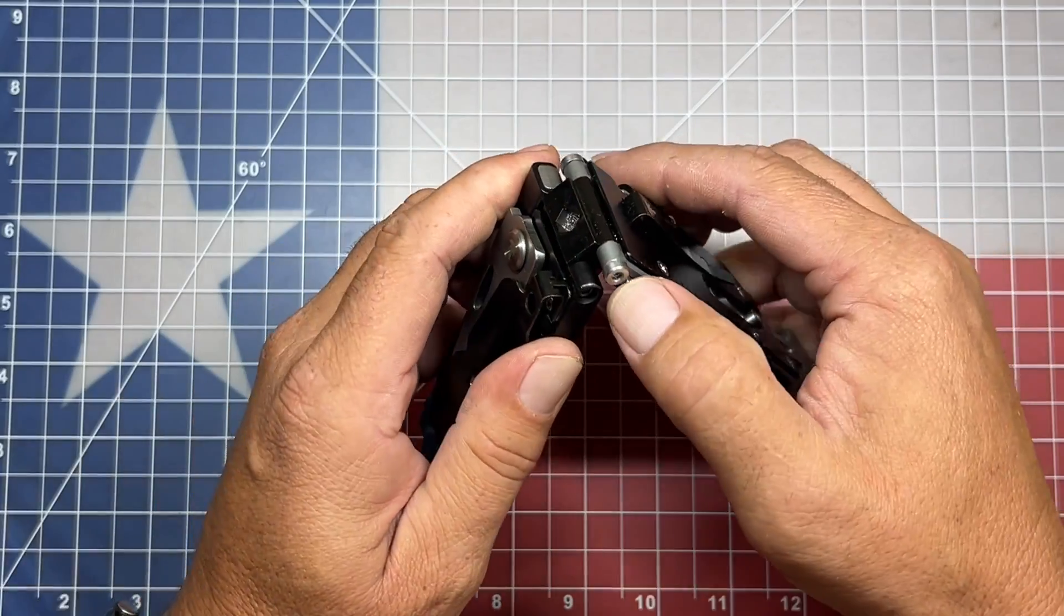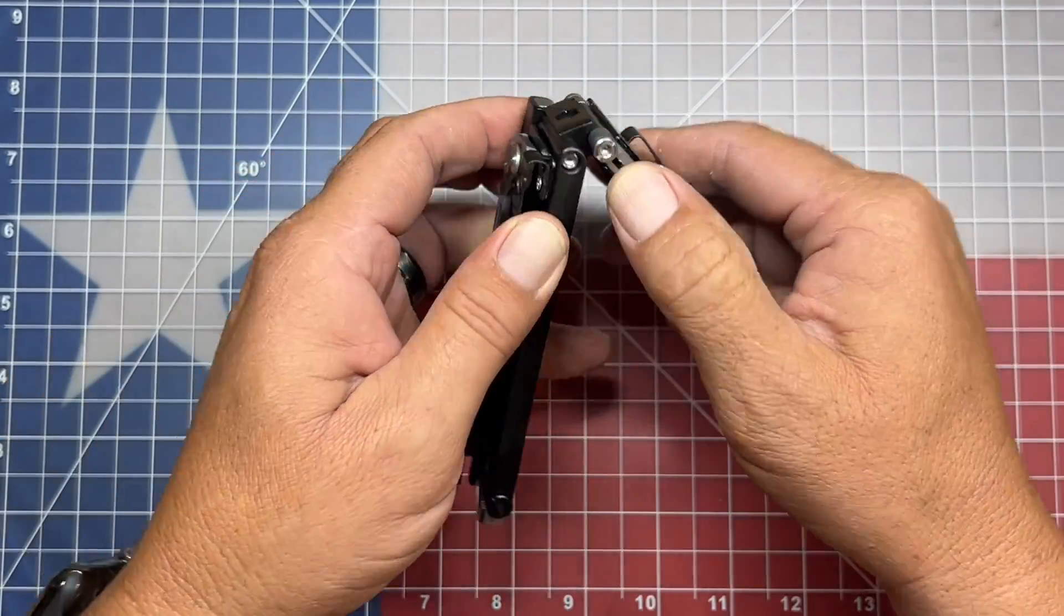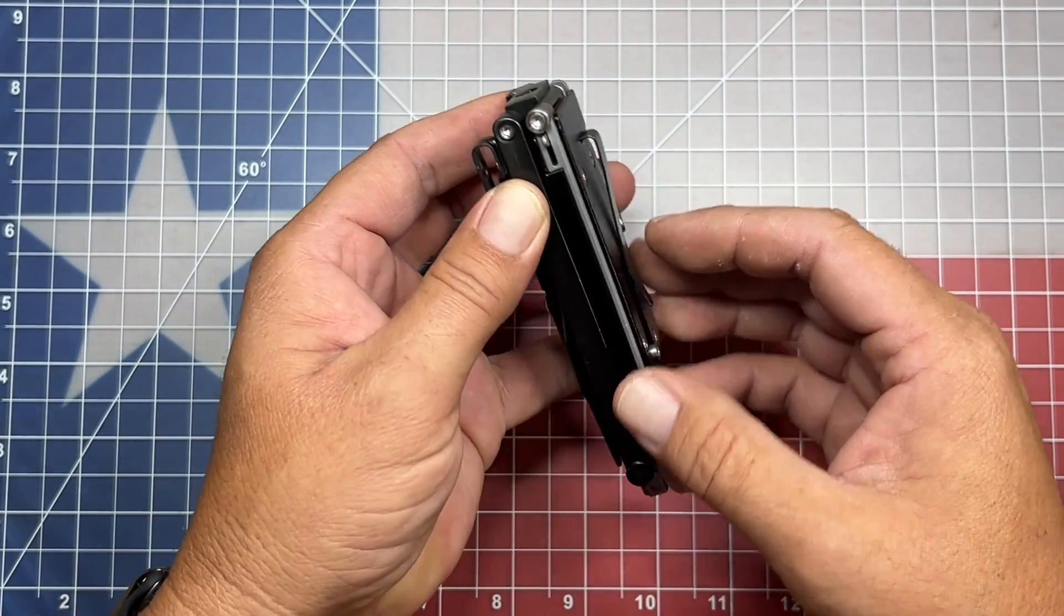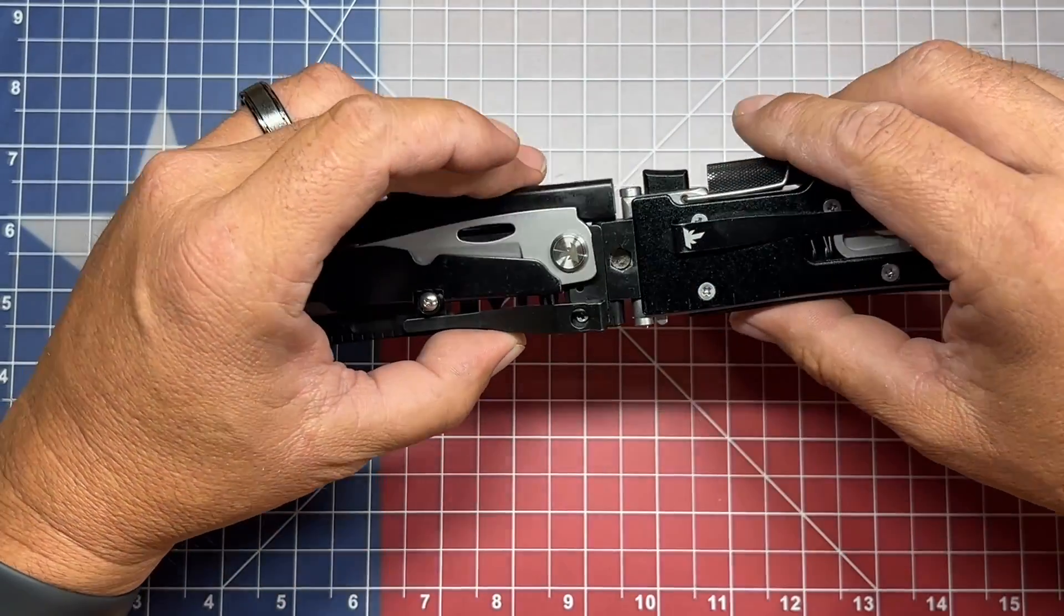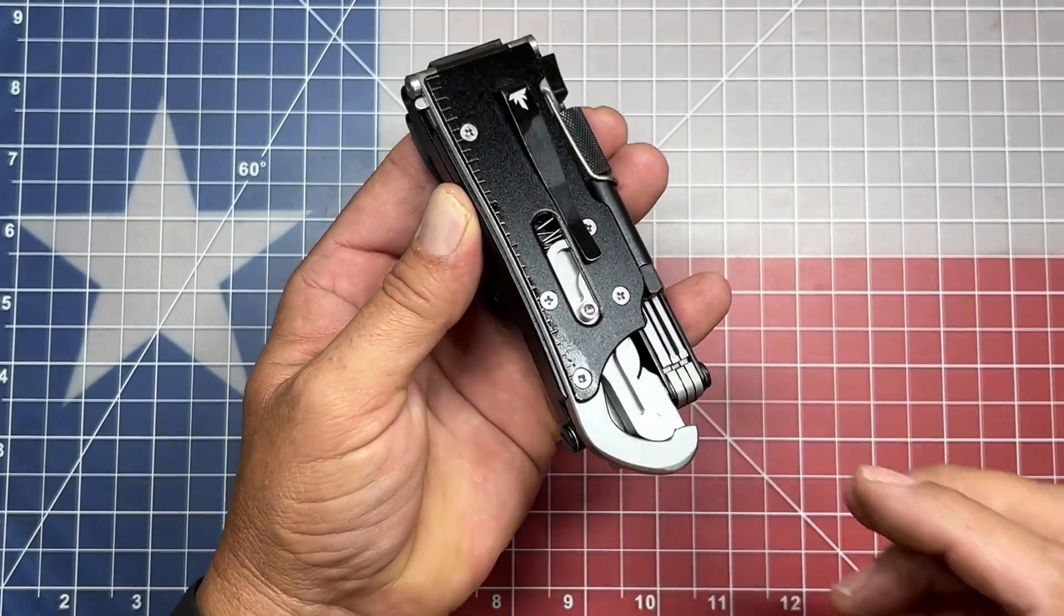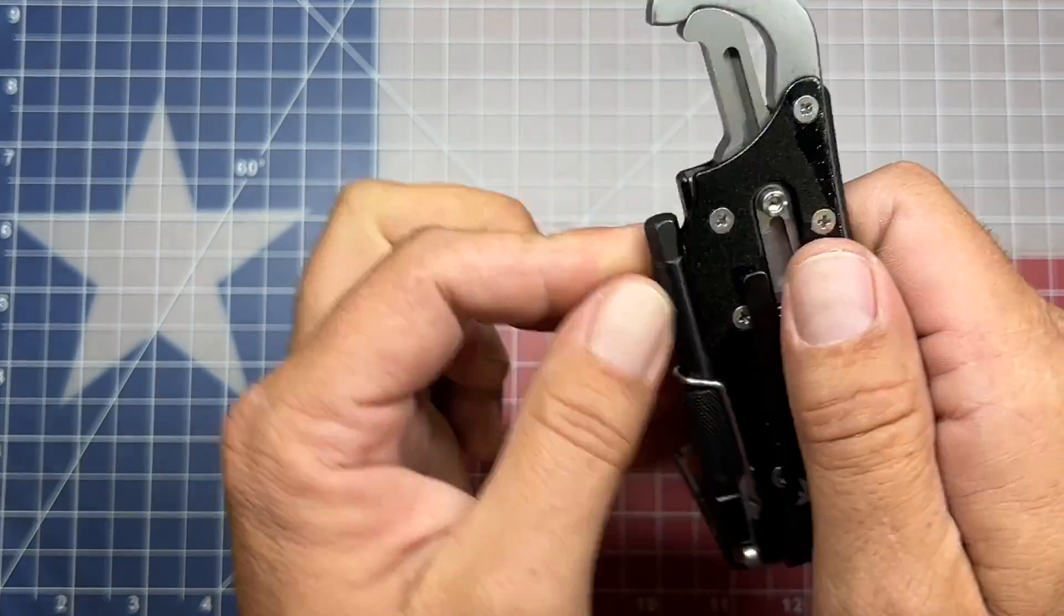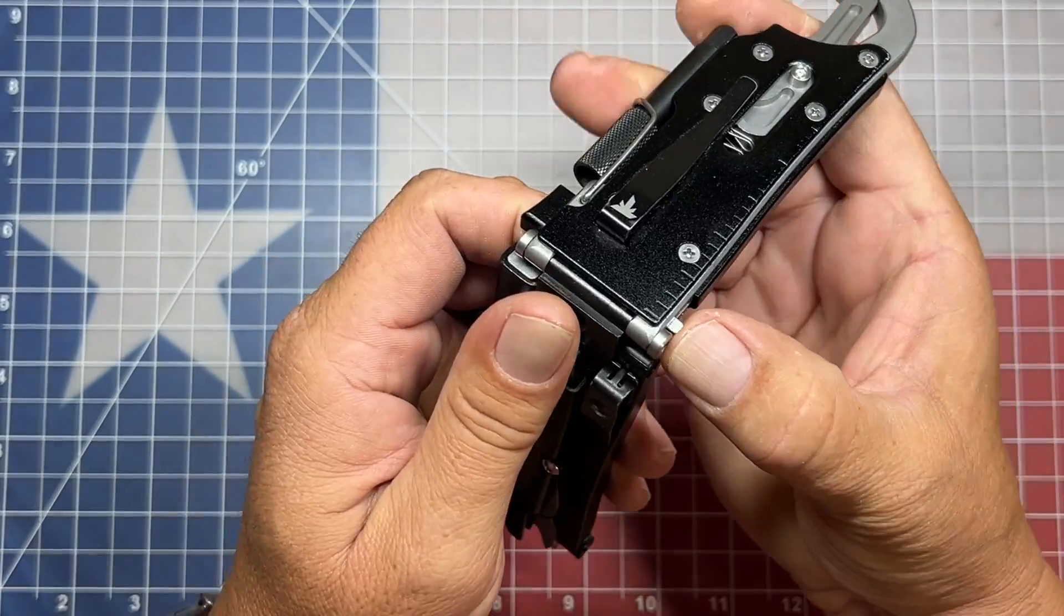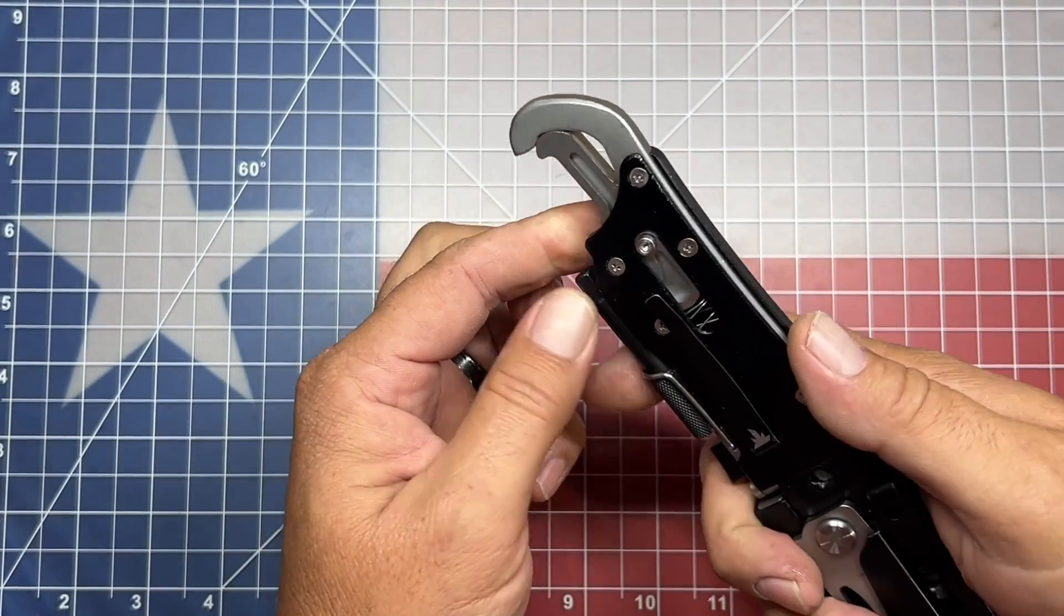It comes with an integrated pocket clip. This particular unit folds out. There is a lock here that will allow you to... That's nice, it kind of locks in place there. So it will swivel out. And then there's a catch here where you can turn it and open it up. And this thing does disassemble, but it may take me a little while to get all this figured out. I'll probably have to go to their start guide.